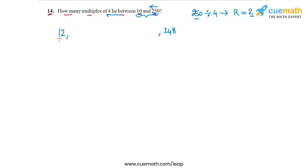So the smallest multiple of 4 is 12 and the largest multiple of 4 is 248, with the constraint that these multiples lie between 10 and 250.